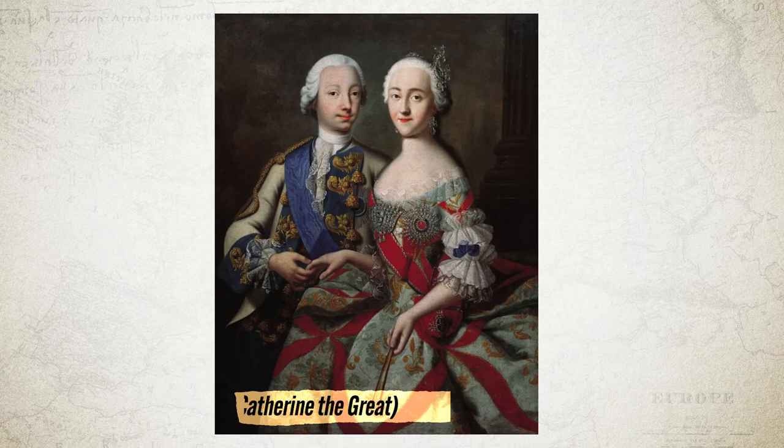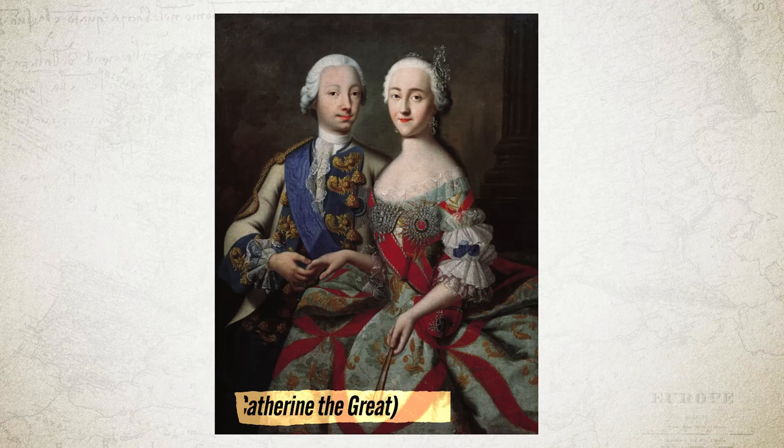Now let's look at how enlightened absolutism shaped up in Russia. Let me introduce you to Catherine II, also known as Catherine the Great. Catherine married Peter III — the same guy who saved Frederick the Great in the Seven Years' War — but Catherine wasn't interested in being the wife of a monarch; she wanted to be the monarch. As she wrote in her memoir: 'I did not care about Peter, but I did care about the crown.' So she hatched a plot to get her husband murdered and thus became Russia's ruler.